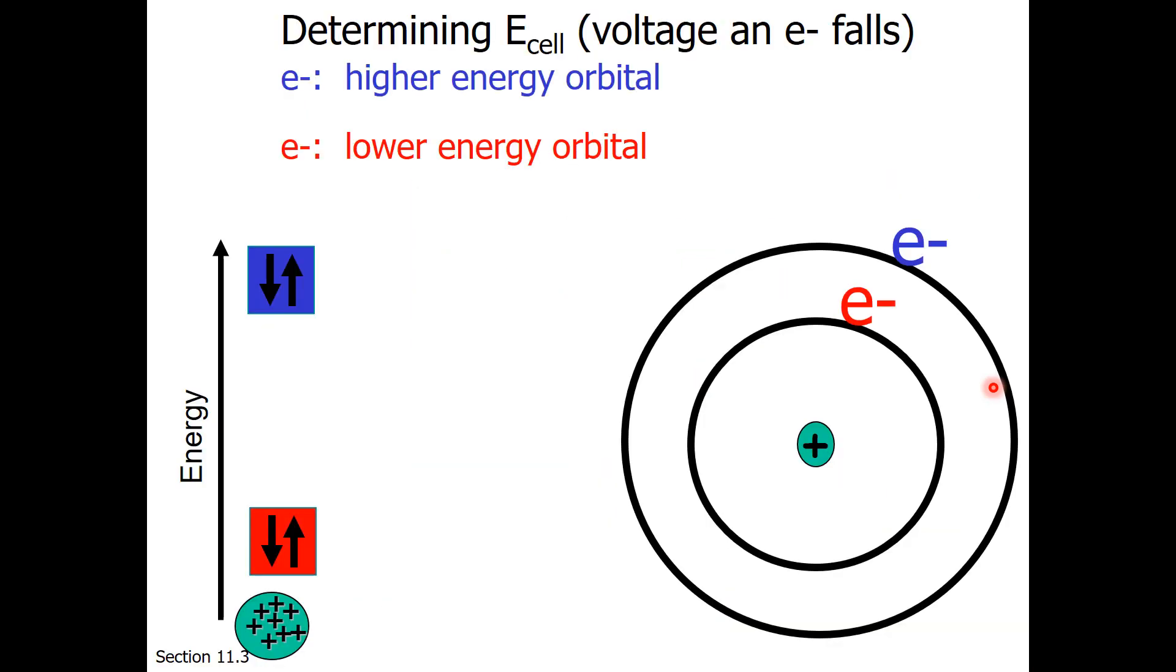Now how do we determine E cell, or the voltage when an electron falls? I think you would agree that if the nucleus is down below, the electrons in the red orbital are at lower energy than the blue orbital. Or if we represented this as the Bohr model of the atom, again, the electrons that are in the red level are closer to the nucleus, and the electrons in the blue level are further from the nucleus.